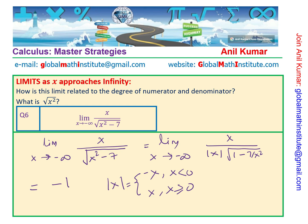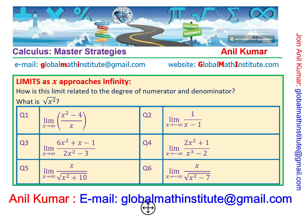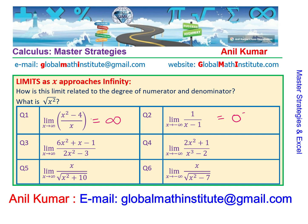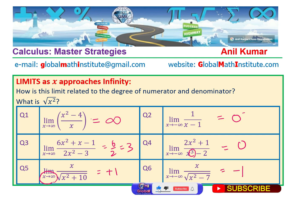To summarize: if the numerator degree is higher, the limit is infinitely large. If the denominator degree is higher, the limit is 0 — approaching from negative if the sign is negative. If the degrees are equal, it is the ratio of the leading coefficients, like 6/2 = 3. For square root cases, the absolute value of x is key: it gives +1 for positive infinity and −1 for negative infinity. This summarizes how to answer these questions very quickly, even for objective-type questions. I hope you understand and appreciate this concept — feel free to comment, like, and subscribe. Thanks for your time and all the best.